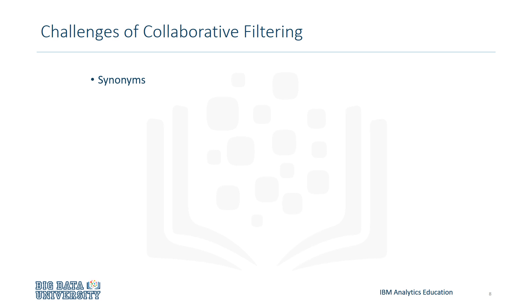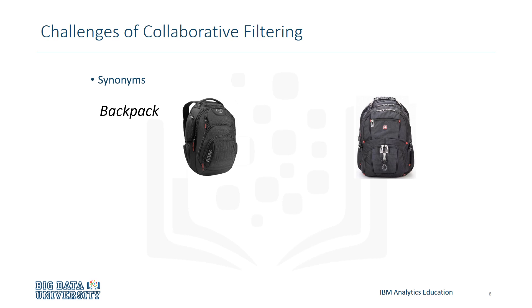The term synonyms refers to the frequency of items that are similar but are labeled differently, and thus treated differently by the recommendation system. An example of this would be backpack versus knapsack. A recommendation system may treat these two items differently because of its labeling, even though functionally they're very similar to one another.